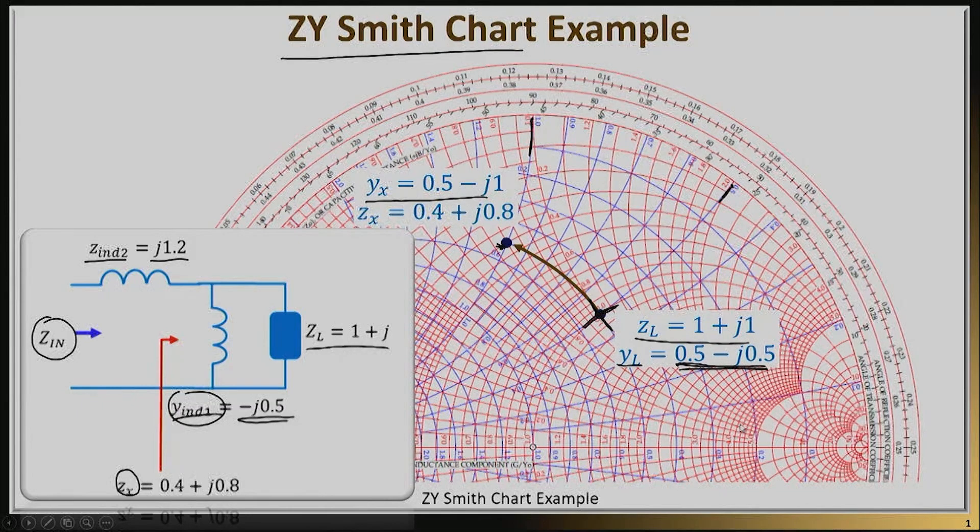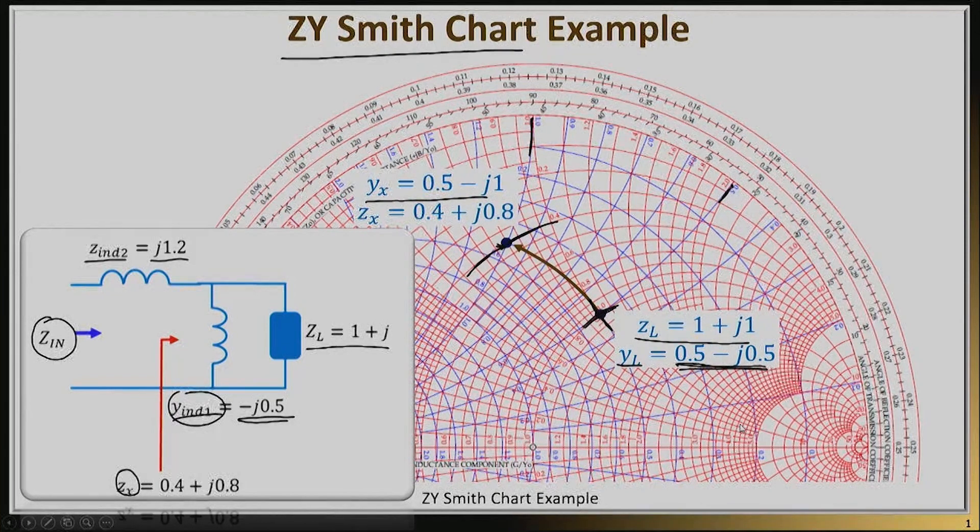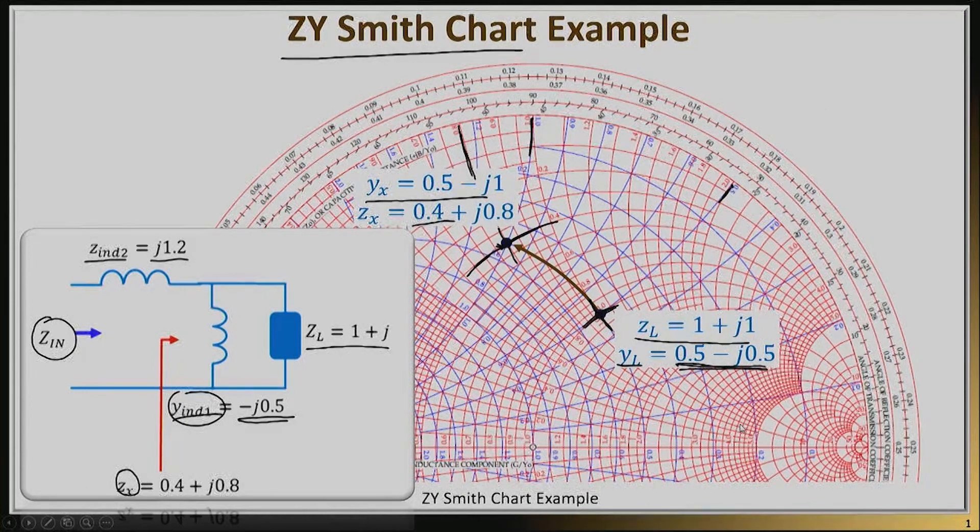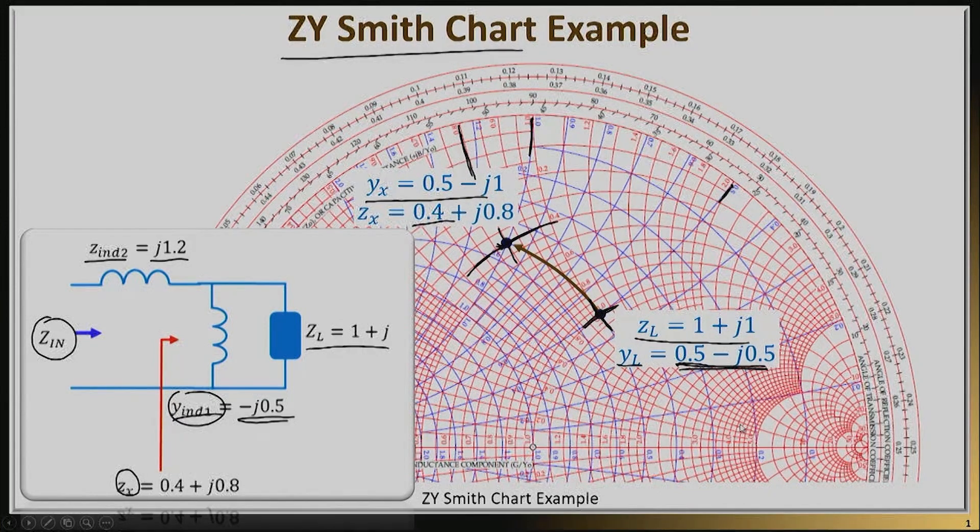By using the Smith chart and looking at the red circles, I can read the impedance part. The real part is on this circle with value 0.4, and the imaginary part is on this circle with value 0.8. That means the imaginary part is plus j0.8. This is the first part—finding what happens when I take my load and add this inductance in parallel.